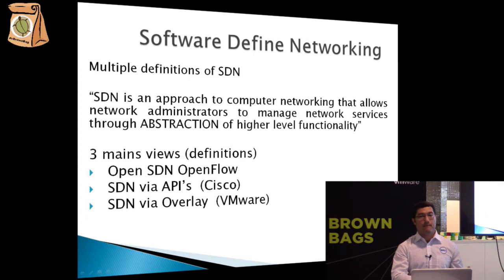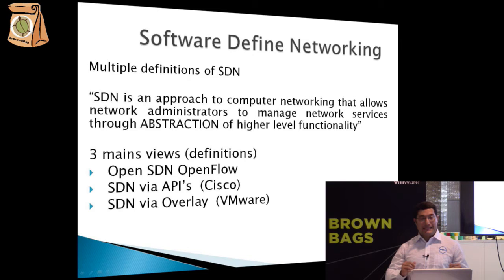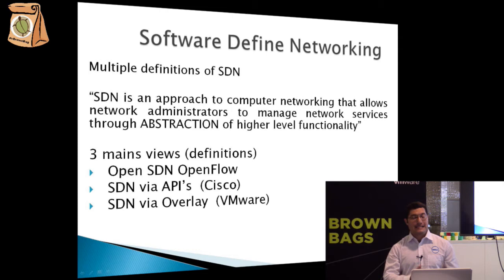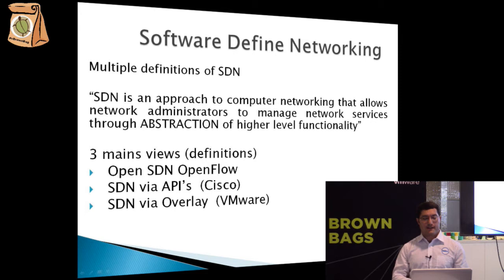On the other hand, we have SDN via API, and this functionality is done by Cisco. In that approach, basically all the functionality of the network devices is exposed to the developer to be manipulated, controlled, and programmed using APIs. The last approach is SDN via overlay, which is the VMware approach, where we use VXLAN across the network infrastructure.